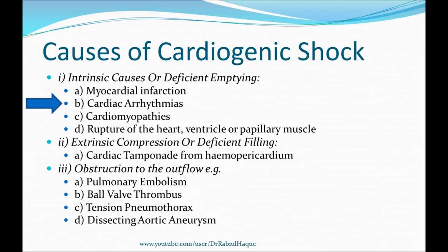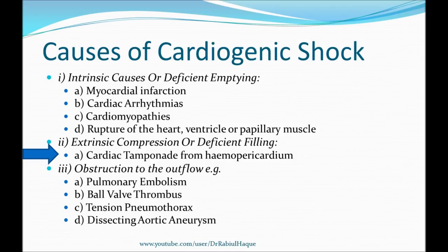Regarding extrinsic compression, one important condition is cardiac tamponade. In this condition, there is severe pericardial effusion — the pericardial space surrounding the heart is filled with fluid, sometimes blood or clot. That fluid compresses the heart so it cannot function properly, causing diminished cardiac output and resulting in cardiogenic shock.